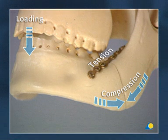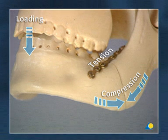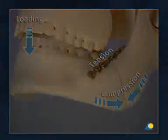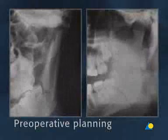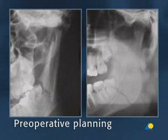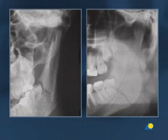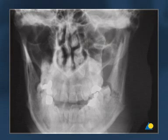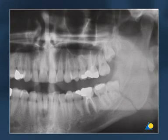Therefore, load sharing takes place when the load across the fracture is shared between the fixation system and the fracture surfaces. Routine diagnosis of this type of fracture should include radiographs taken in two planes at 90 degrees to each other, such as a PA view and a pan-oral view.